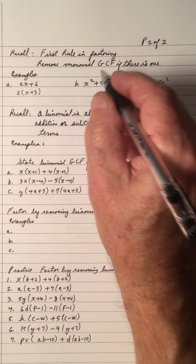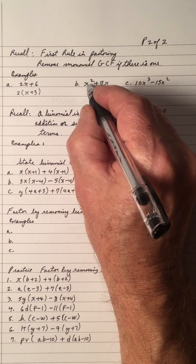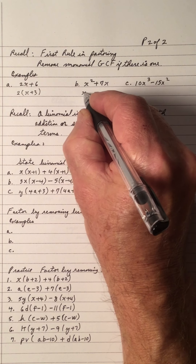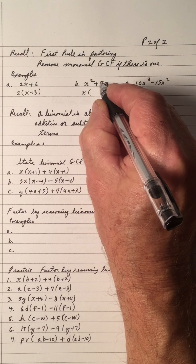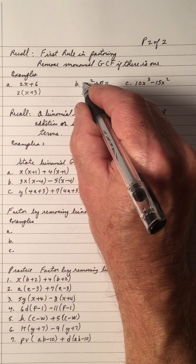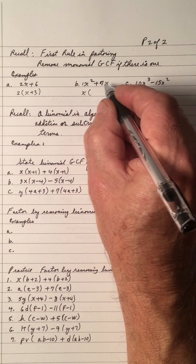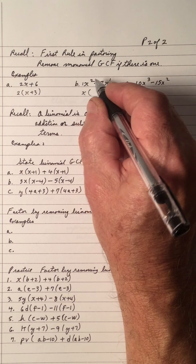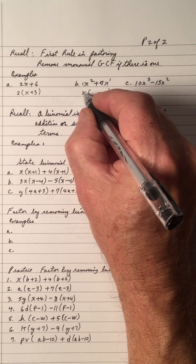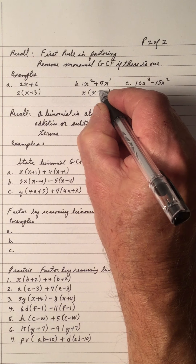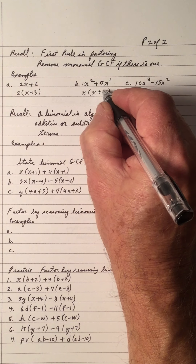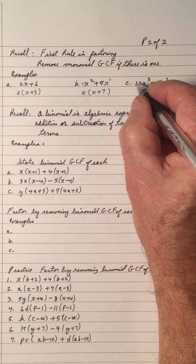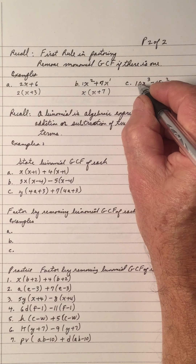To factor means to express as a product. For x squared plus 7x, there's no number common because there's a 1 and a 7, but there is an x. We take the smallest exponent, which is 1: x squared divided by x is x, and 7x divided by x is 7.